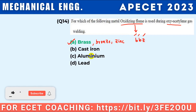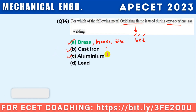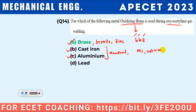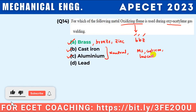Neutral flame is used for mild steel, cast iron, low carbon steel, aluminum, and copper.